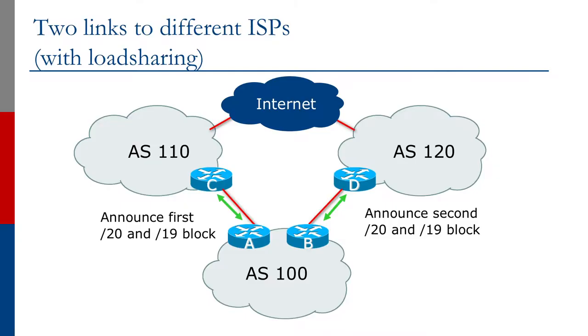We're going to look at how to handle two links to different ISPs but with load sharing. We'll look at a simple example first and then follow it up with something more complex. We have AS100 connecting to upstreams AS110 and AS120. As before, we're going to announce the aggregate block out to both upstreams, so if either link should fail we still have backup through the other operator.